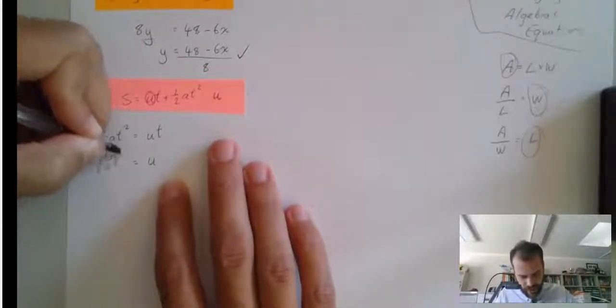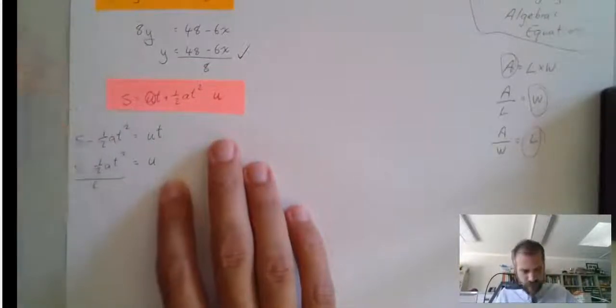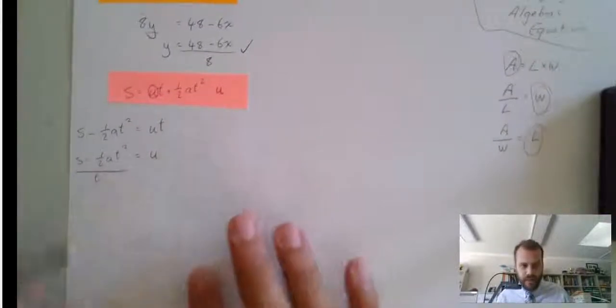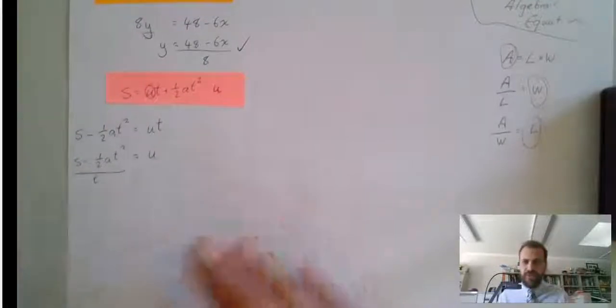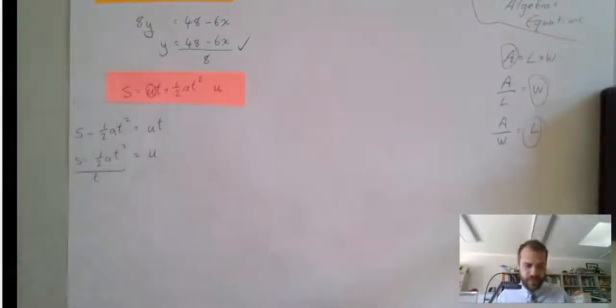s minus 1 half at squared divided by t. U is the subject, and all of this is here. Now, it doesn't matter if I put u on the left, u on the right. As long as it's by itself, it's the subject.